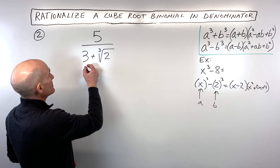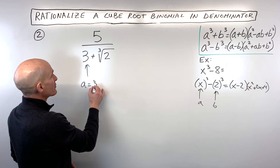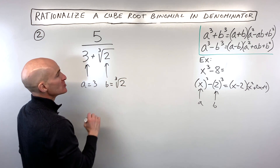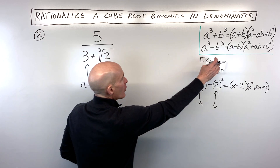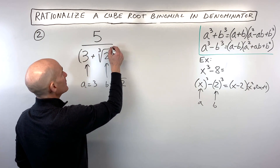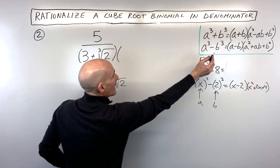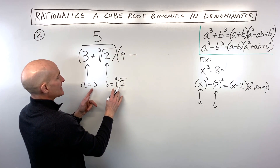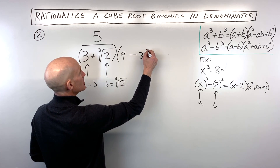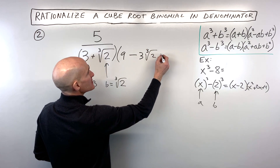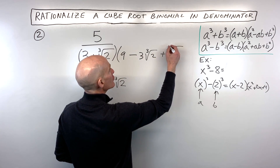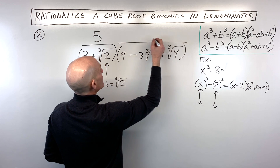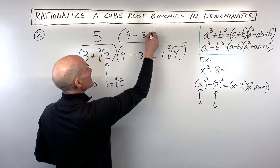In this problem, our a value is 3 and our b value is the cube root of 2. So we multiply by the trinomial: a squared is 3 squared which is 9, minus a times b which is 3 times the cube root of 2, plus b squared which is the cube root of 2 squared, or the cube root of 4. Remember, whatever we multiply the denominator by, we also multiply the numerator by that same quantity.